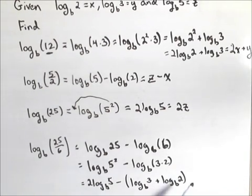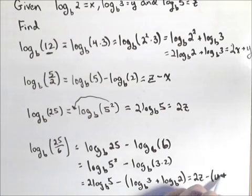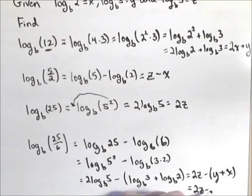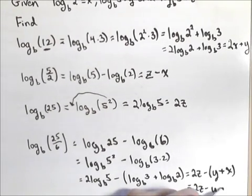So now I can rewrite this in terms of x, y, and z, because it's going to be 2 times z minus the quantity, log base b of 3 is y, log base b of 2 is x, and if we want to distribute that negative, we could write it as 2z minus y minus x.